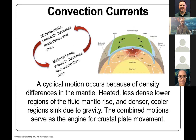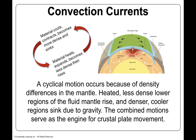Convection currents: material in the mantle cools, contracts, and becomes more dense and sinks. Material heats, expands, and becomes less dense, so it begins to rise. This cyclical motion occurs because of density differences in the mantle — heated, less dense lower regions cause the mantle to rise, while denser, cooler regions sink due to gravity. This combined motion serves as an engine for crustal plate movement. This was the mechanism that Wegener didn't know about that would support his theory as fact.